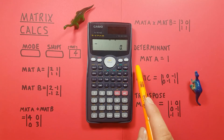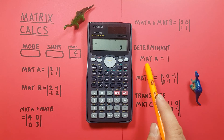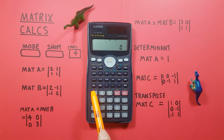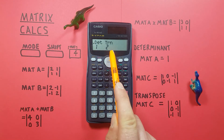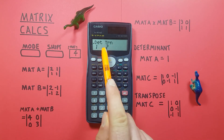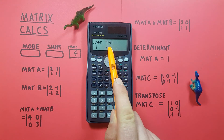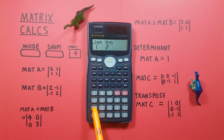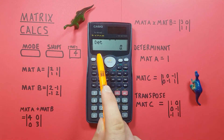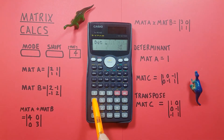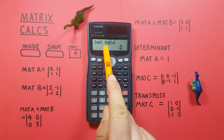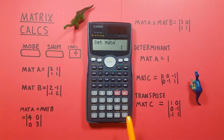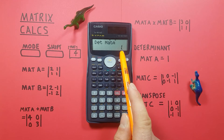We can also find the determinant of a matrix. For example, to find the determinant of matrix A: go to the matrix menu, press the right arrow to get a new menu showing DET (determinant) and TRN (transpose). Press 1 for DET, then go back to the matrix menu and choose matrix A by pressing 1. Press equals, and we get a determinant of 1.